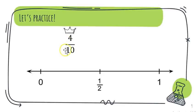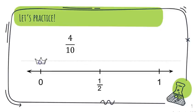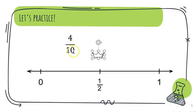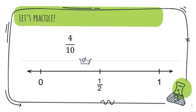The next one is four-tenths. Same idea — the denominator tells me to get from zero to a whole I need ten pieces, and I have four. Four is not quite zero, and for a half I need five plus five to make ten. Four is just a little bit less than five, so I would place this between zero and a half, a little bit closer to a half because it's almost there.